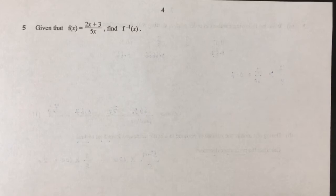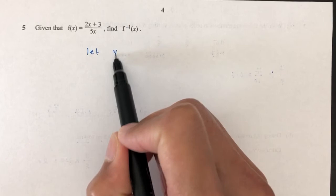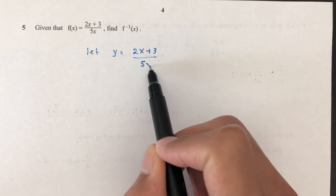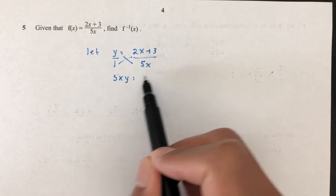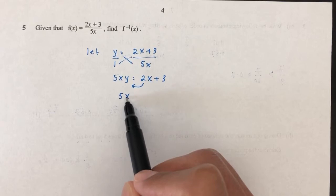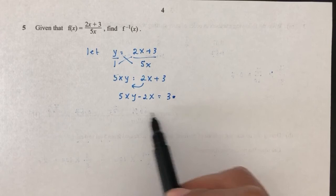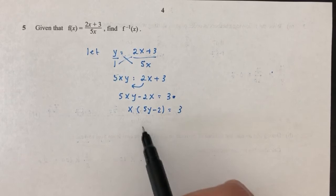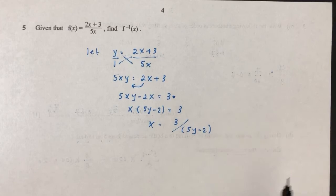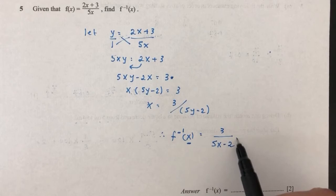Question number 5: f(x) equals (2x plus 3) over 5x. Find the inverse. Let y equal f(x), which is (2x+3)/(5x). Make x the subject: 5xy minus 2x equals 3, then x(5y minus 2) equals 3, so x equals 3 over (5y minus 2). Therefore f inverse of x is 3 over (5x minus 2).